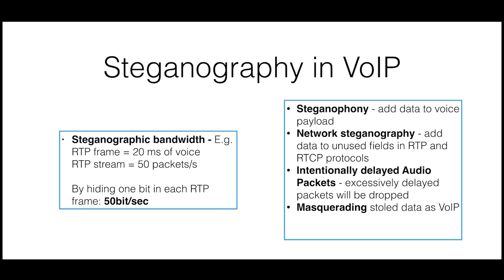Data can also be exfiltrated by masquerading it as voice or repeat traffic, by converting data octets into audio tones and faking a call. Finally, the ECAPS technique inserts malformed packets in the VoIP stream, leveraging the fact that those would be dropped at the destination, but they can still be intercepted by the covert channel endpoint.